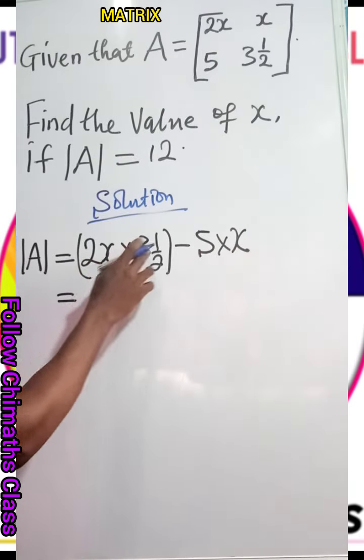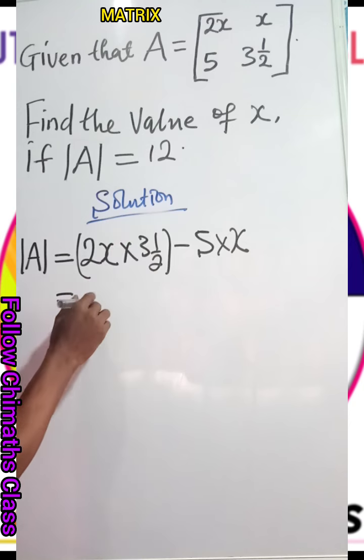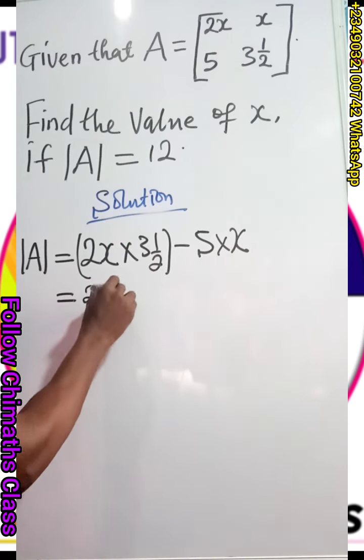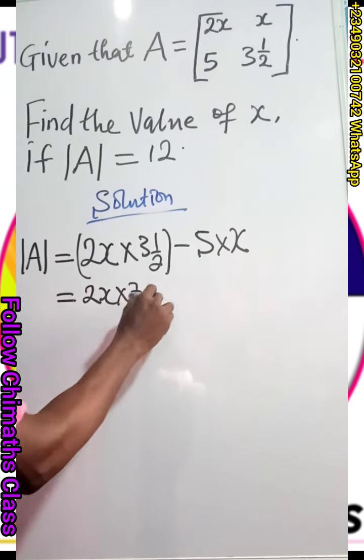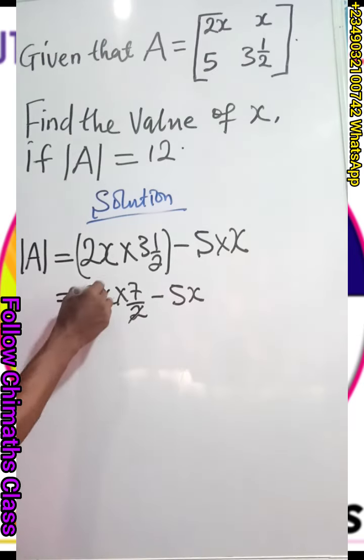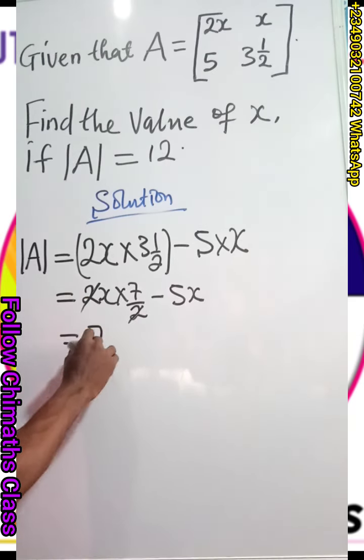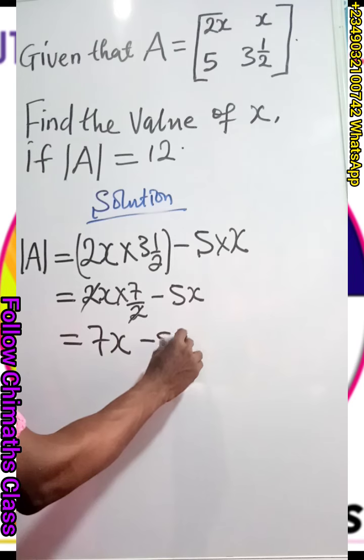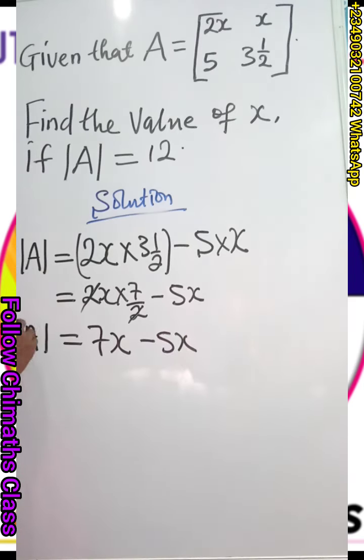This will give us 2X multiplied by 7 over 2 minus 5X. We can cancel so that we have 7X minus 5X. That is the determinant.